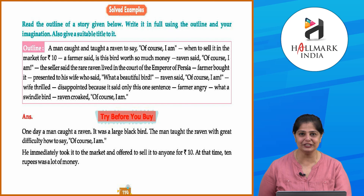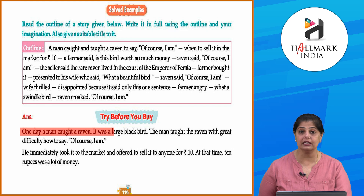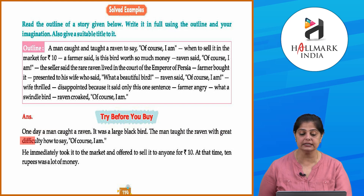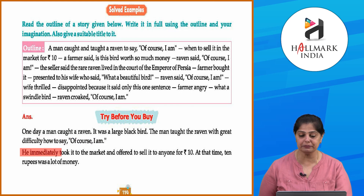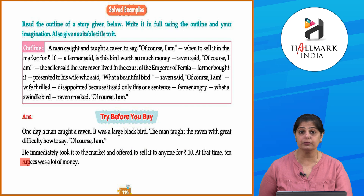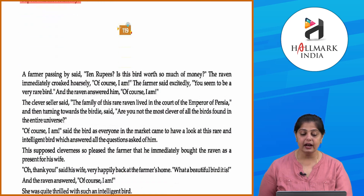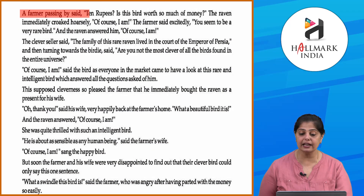The title given to this story is 'Try Before You Buy.' One day a man caught a raven — it was a large black bird. The man taught the raven, with great difficulty, how to say 'of course I am.' He immediately took it to the market and offered to sell it to anyone for 10 rupees. At that time, 10 rupees was a lot of money.